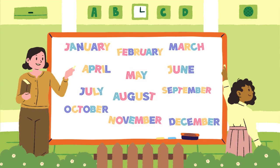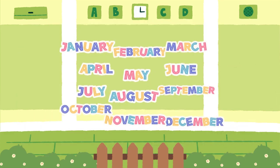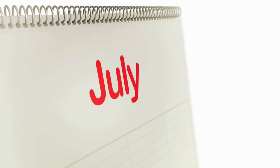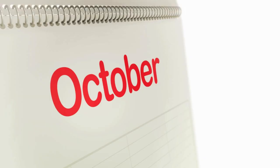Did you know there are 12 months in a year? Let's say them together: January, February, March, April, May, June, July, August, September, October, November, December.